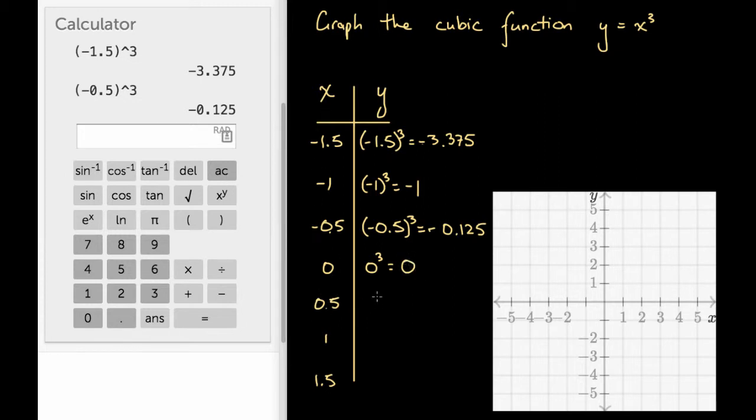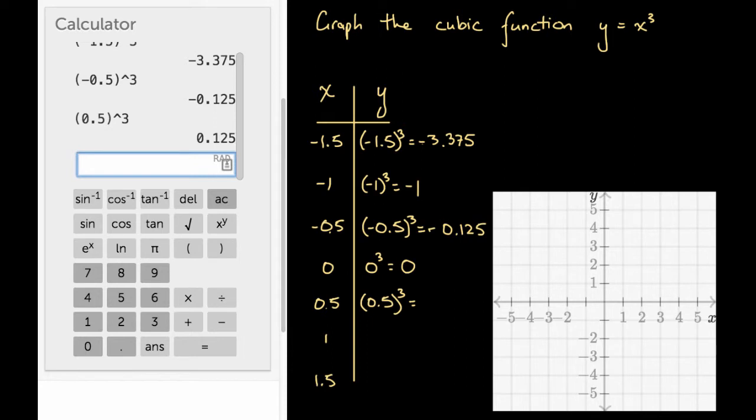x equals 0.5. At x equals 0.5, y is going to equal 0.5 cubed. Let's go to our calculator again. We'll say 0.5 cubed. That's going to equal 0.125.